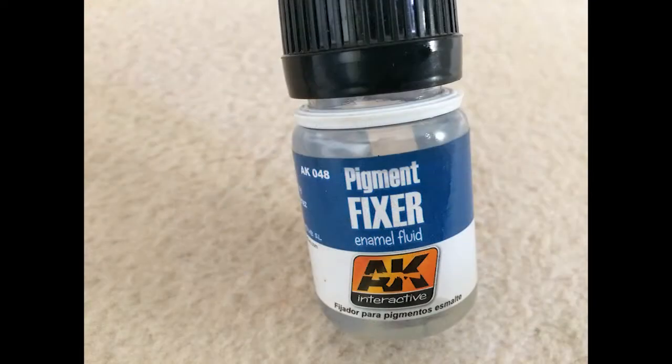And we're going to need a pigment fixer. The pigment fixer will allow your weathering powder to stay on the model without fading off too quickly and it will actually keep it in place. That's a very important counterpart to applying the weathering powders.